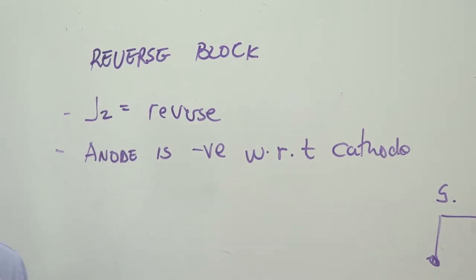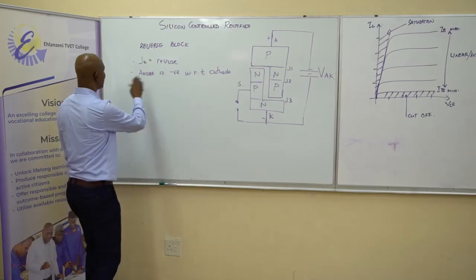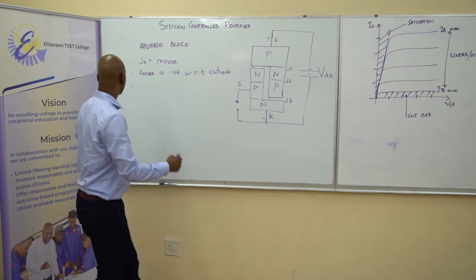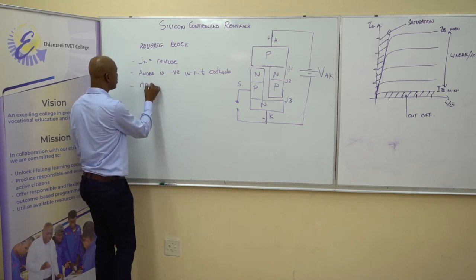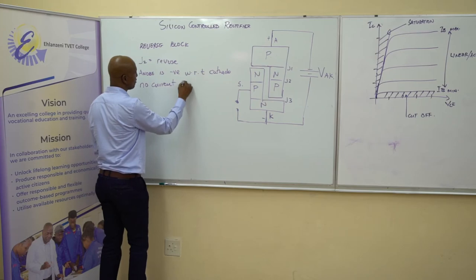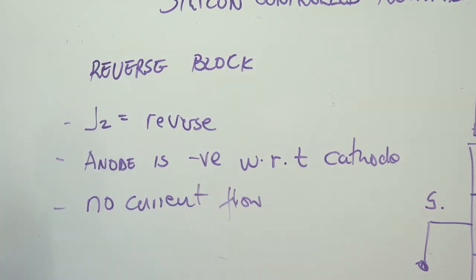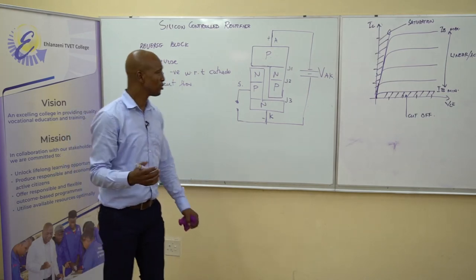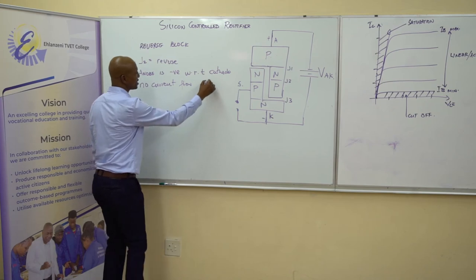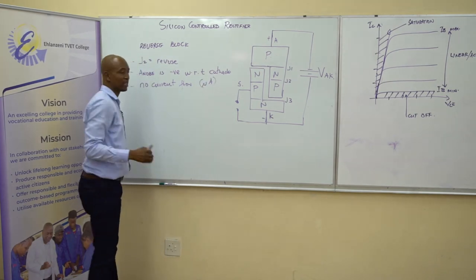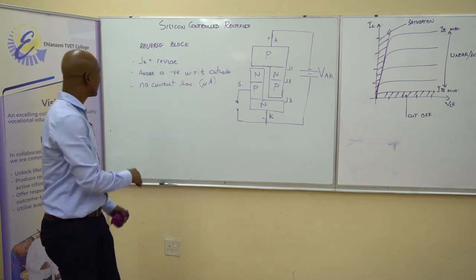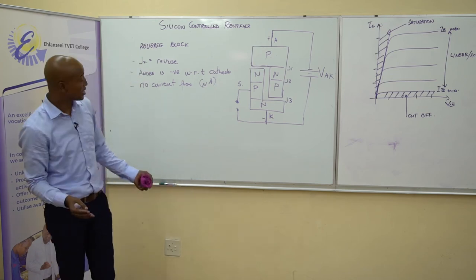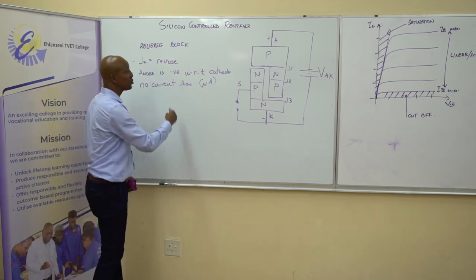Under these conditions, the device is less likely to conduct — we say there is no current flowing through. But in practice, we have what we call leakage current, very small amounts in the order of microamps, which is a very minimal current. So we say the device is non-conductive. We cannot expect in a reverse blocking mode the device to conduct.